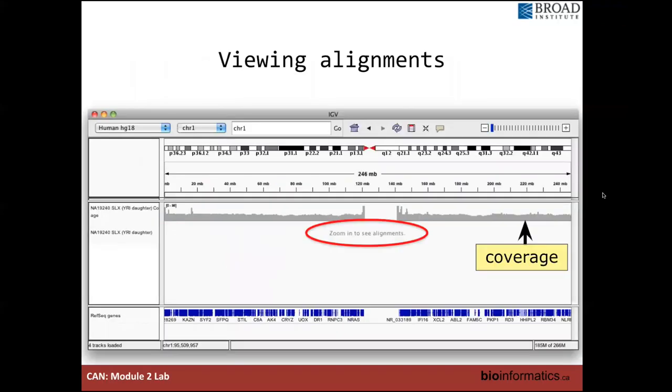Once your file is loaded, if you're loading a BAM file, you'll see a coverage track as well pop up for each BAM file that you load. And this shows how many reads are covering any particular region that you're looking into. And you're going to have to zoom in to see the actual alignments. This is because BAM files can be extremely large, contain several gigabytes of data, and trying to load that all at once onto your computer is going to absolutely freeze and cause problems.